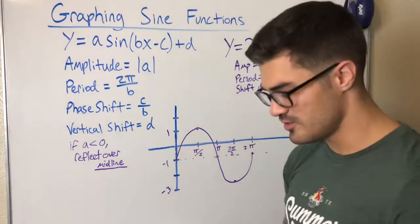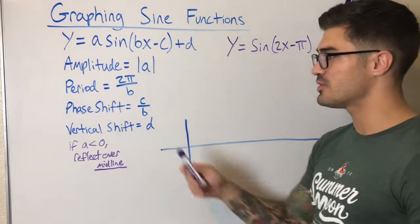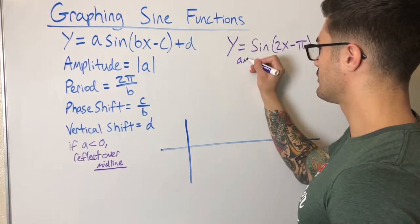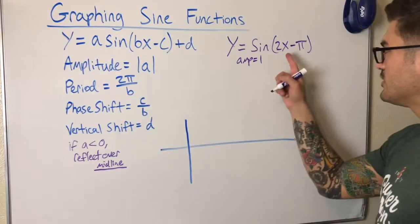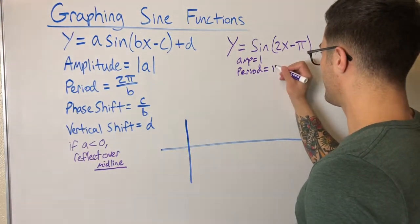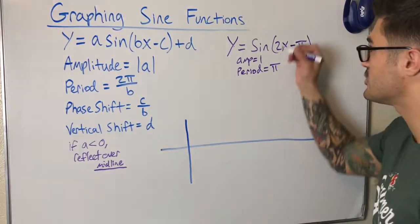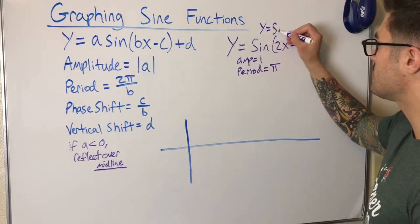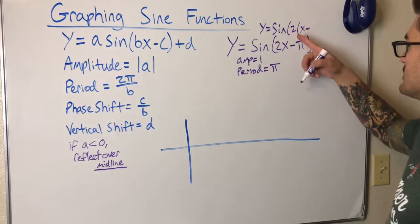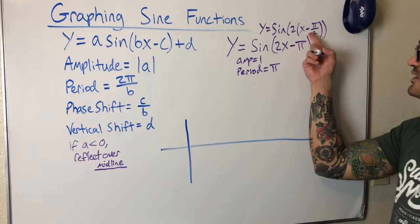Now let's graph y equals sine of (two x minus pi). We have a change in period and a phase shift. Amplitude is still one. B is two, so the new period is two pi over two, which equals pi. For the phase shift, it's C over B. We can factor the two out: sine of two times (x minus pi over two), which clearly shows the shift is pi over two.